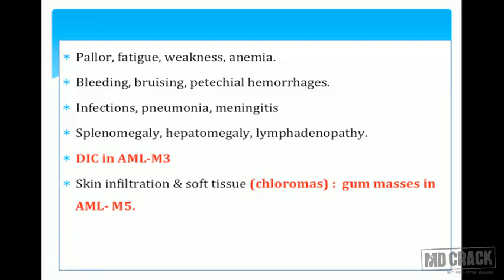Splenomegaly is most important for acute and chronic myelogenous leukemias, while lymphadenopathy is very important for ALL and CLL. Myeloid leukemias present more with splenomegaly and rarely lymphadenopathy, whereas lymphoid leukemias and lymphomas mainly present with lymphadenopathy and rarely splenomegaly and hepatomegaly.